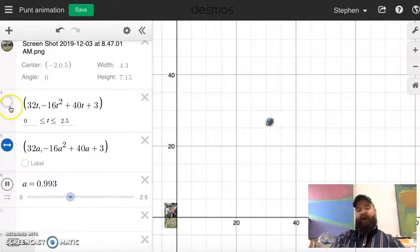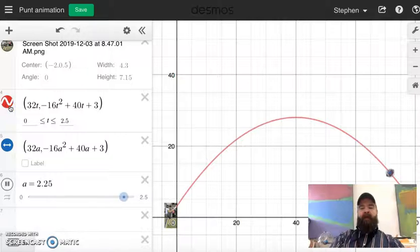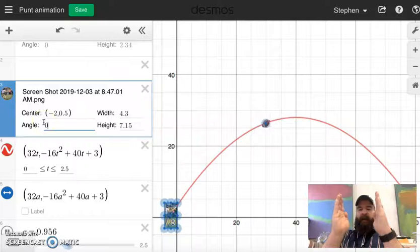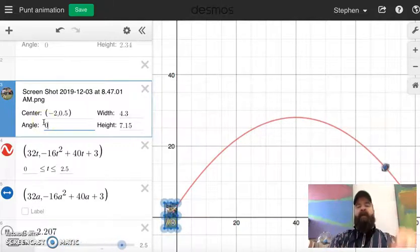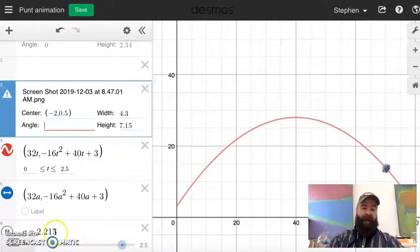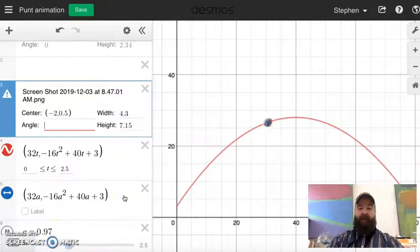One last thing you could do, although I don't really recommend doing it, you can if you want to make the thing that's flying spin through the air. And the way you do that is this angle, that's the angle that the picture is oriented. If you wanted to make it spin, you can change that to something that involves A. So if I change this to say just plain old A,